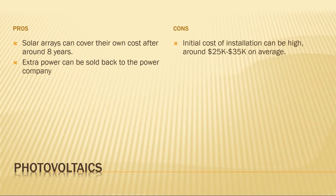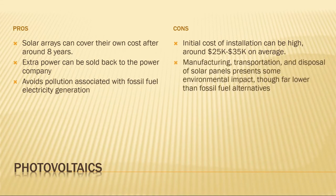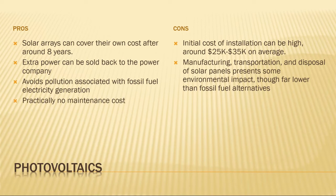However, the initial cost of installing solar panels can be high, ranging from around $25,000 to around $35,000 for an average home. This cost can be reduced by tax credits, and some solar customers save money on installation by leasing their solar array instead of buying it. Solar panels emit zero pollution while they make electricity. However, they are not completely without an environmental footprint. The manufacturing, transportation, and disposal of solar panels still presents some environmental impact, though it's far lower than fossil fuel alternatives.